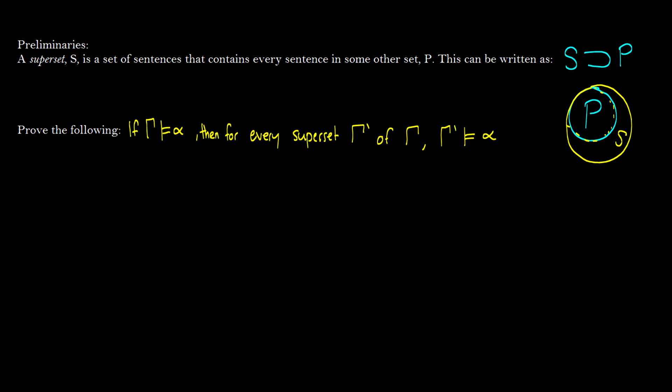So, using this, we are going to prove the following. If gamma entails alpha, then for every superset gamma prime of gamma, gamma prime is also going to entail alpha.